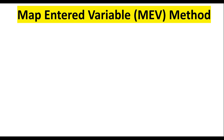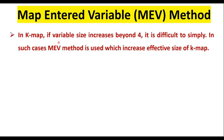In this video, I will discuss the map entered variable or MEV method, also known as MEV technique. This is another method to simplify a given Boolean expression. As we know from previous lectures, we can simplify Boolean expressions using Karnaugh maps. Likewise, map entered variable is another method. In KMAP, if variable size increases beyond 4, it is difficult to simplify. In such cases, MEV method is used, which increases the effective size of the KMAP.